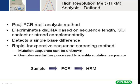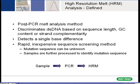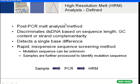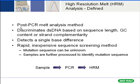The technique is basically an in-depth analysis of a typical melt curve that's produced in a qPCR reaction. It's a post-PCR melt analysis method, used traditionally to determine whether or not you have a specific amplicon in your PCR reaction. But the curve can also be analyzed under the right conditions to discriminate the double-stranded amplicon based on sequence length and GC content.